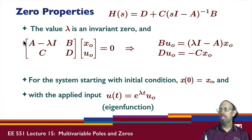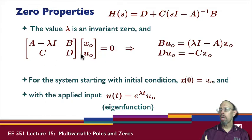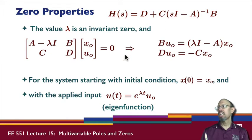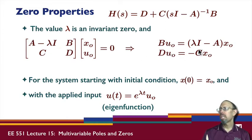This actually gives two equations: A minus lambda I times x0 plus B times u0, and C times x0 plus D times u0. I can write these two equations and bring terms to the other side, so x0 moves over. Basically, I can write u0 in terms of x0.